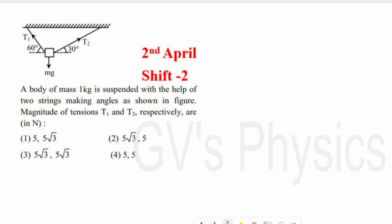The next one is a most important question. A body of mass 1 kg is suspended with the help of two strings making angles as shown in the figure. We need to find tensions T1 and T2. The body experiences gravitational force Mg downward, and two tensions T1 and T2. Tension is a vector quantity, so we must resolve components using the angles each string makes.